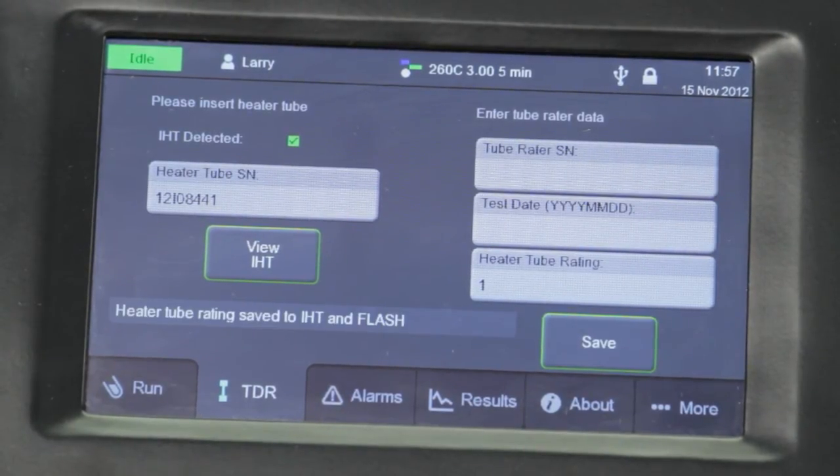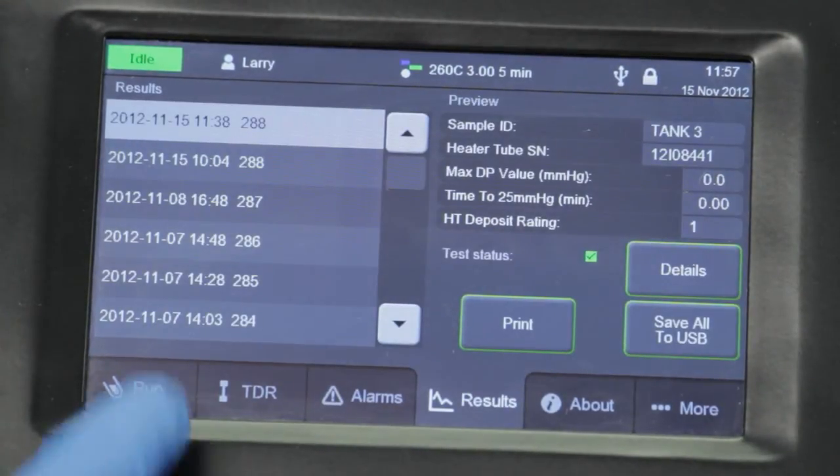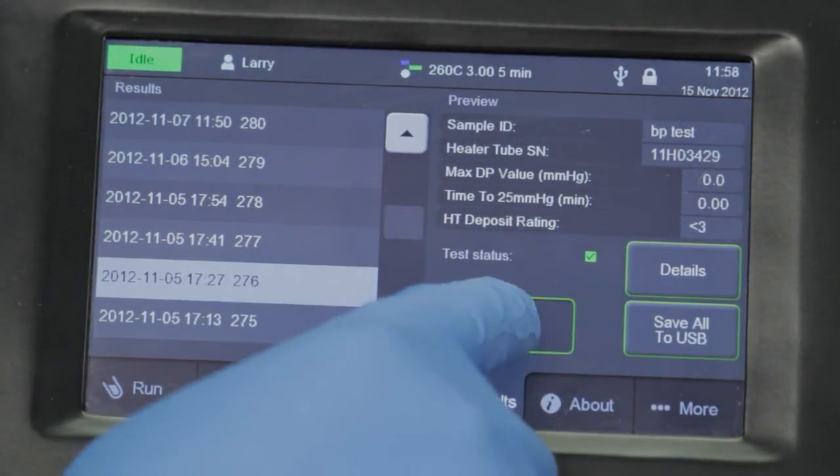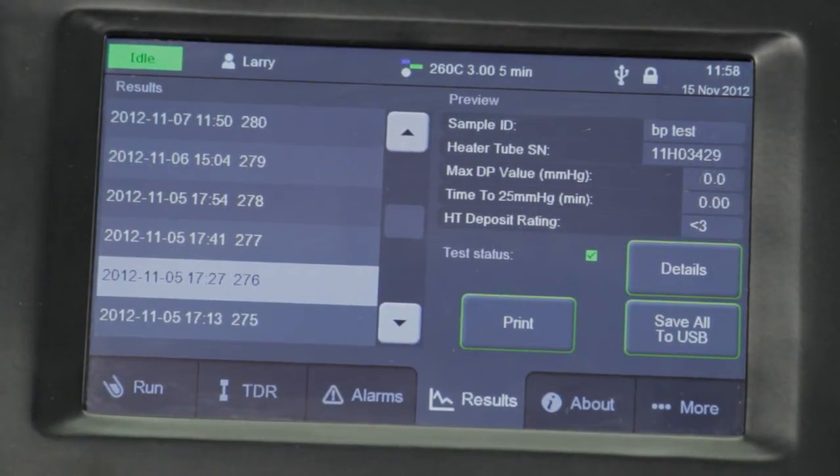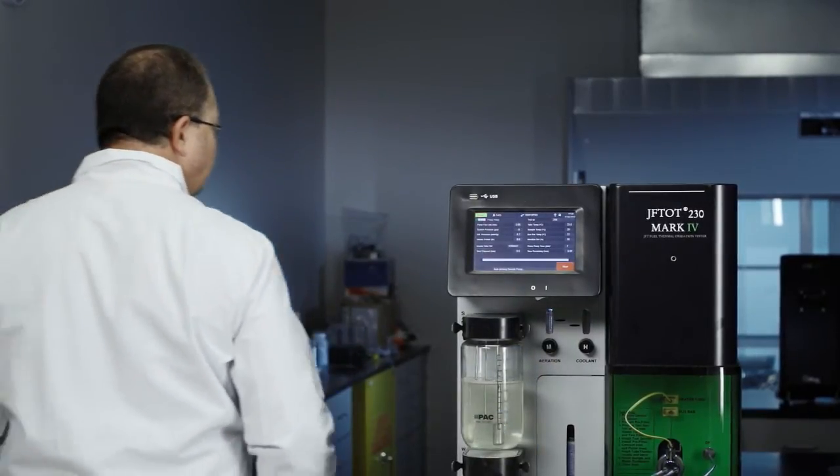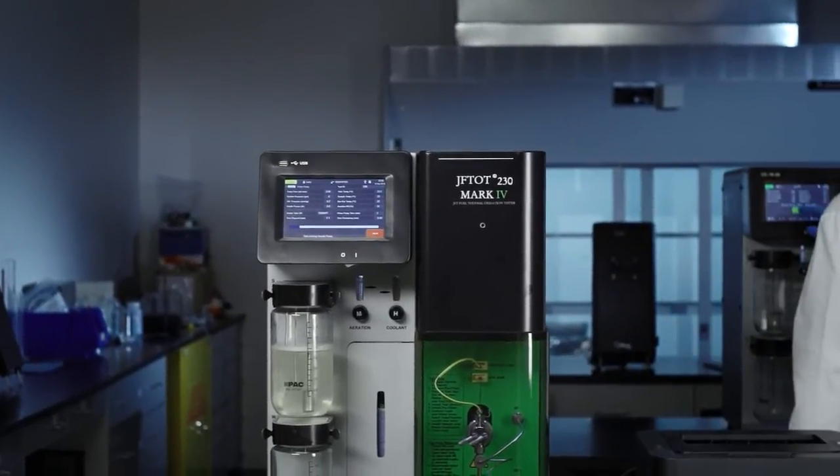100 tests can be saved on the unit and can also be saved on a USB drive. You can see the test results on the screen as well as print them from the results tab. In addition to being safer, smaller and simpler, the Jephtot 4 automates activities that have traditionally been time intensive, like pump priming, flow monitoring and sample aeration.